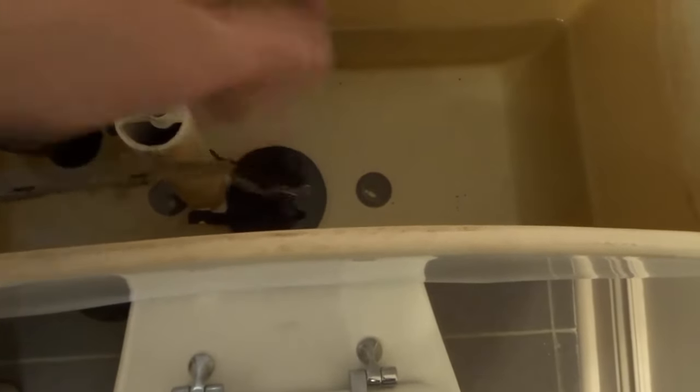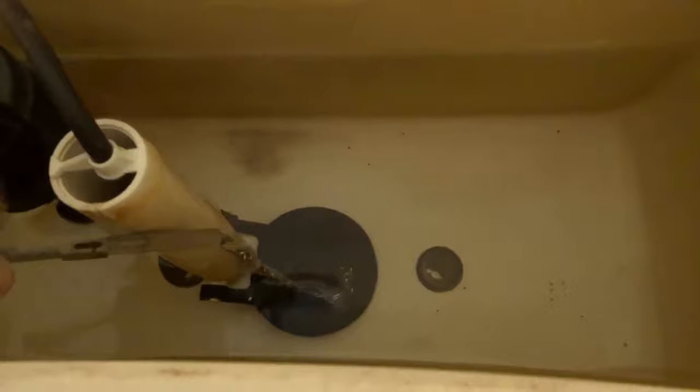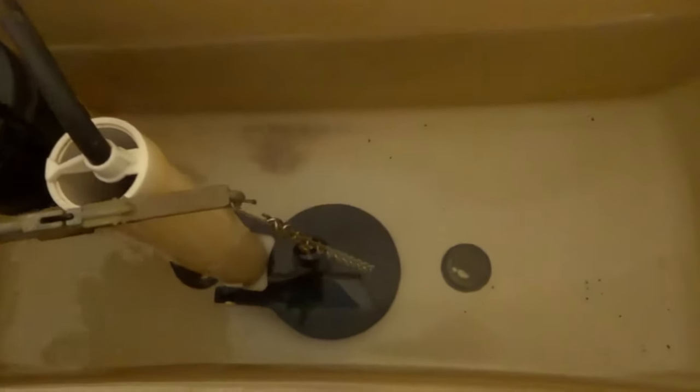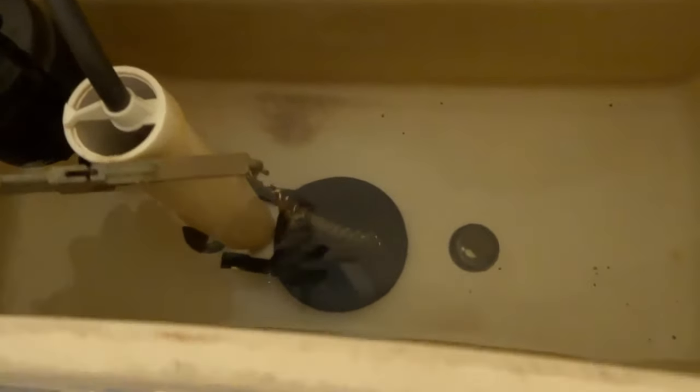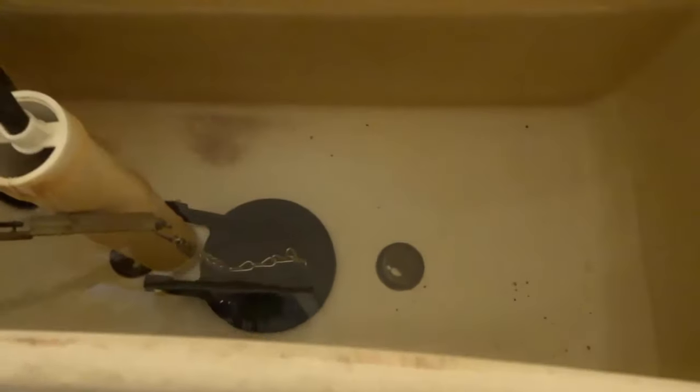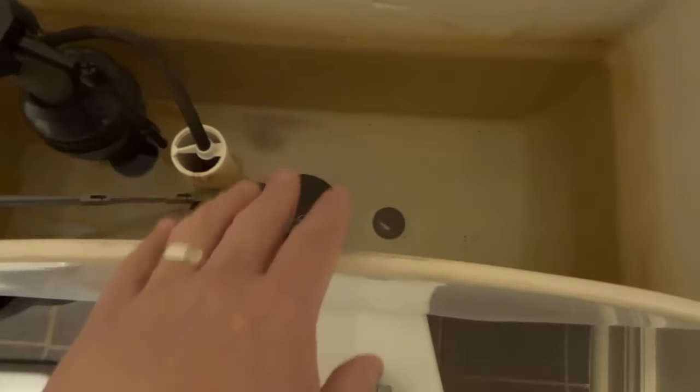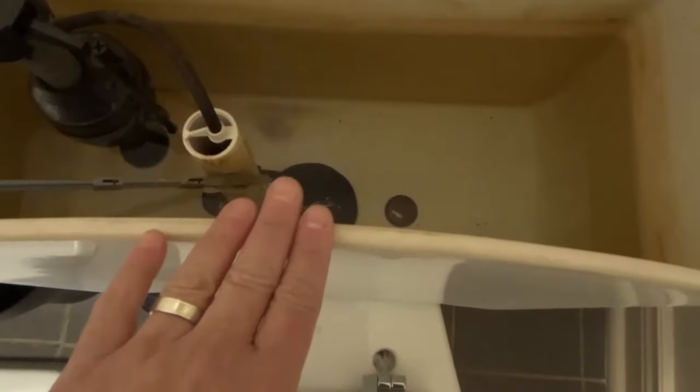You see, when I push this lever down, the lever over here pulls up on the chain which pulls up on the flapper. If I had too much slack, then it would only pull up on the flapper a little bit, so it wouldn't allow the flapper to fully open. If your flapper is just kind of opening and closing and you're getting a weak flush, then it's likely because you have too much slack on the chain.